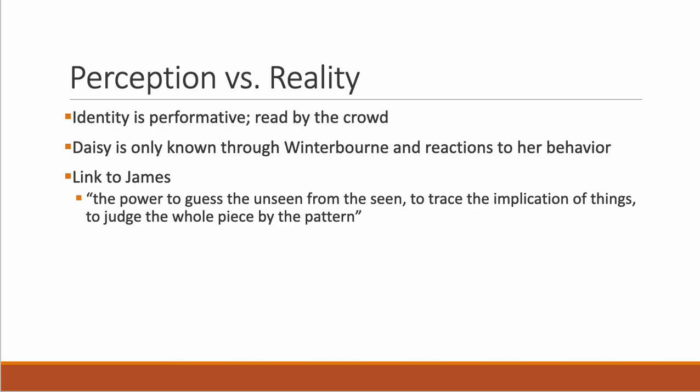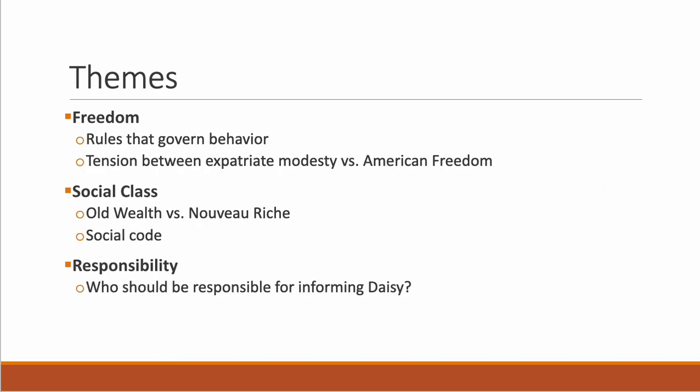I hope you enjoy Daisy Miller. It's a novella but it's a complete story. Pay attention to those themes we talked about, especially issues of freedom — where freedom exists and where tension exists — social class and how the social codes are used to keep people in boxes, and who ultimately is responsible for Daisy. Is she responsible for herself? Is her mother responsible? Is Winterborn, who knows better, responsible? Or is it some combination of these? Please let me know if you have any questions — I'm happy to talk more about it with you.